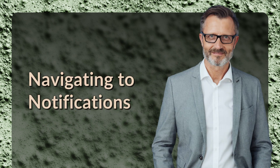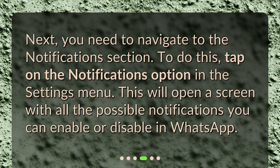Next, you need to navigate to the Notifications section. To do this, tap on the Notifications option in the Settings menu. This will open a screen with all the possible notifications you can enable or disable in WhatsApp.